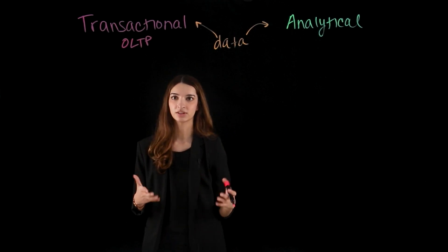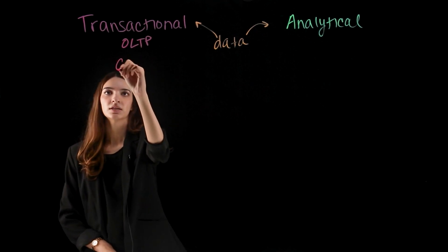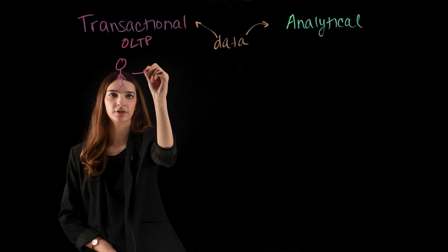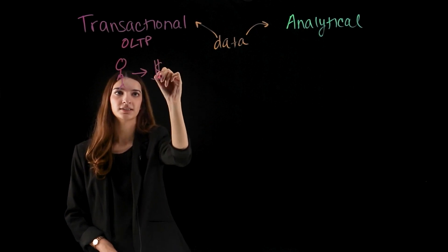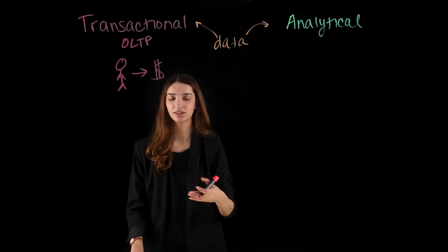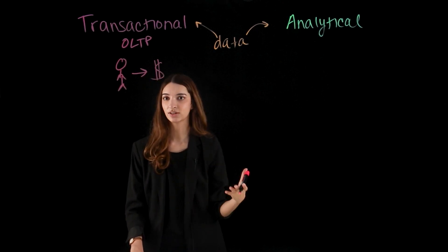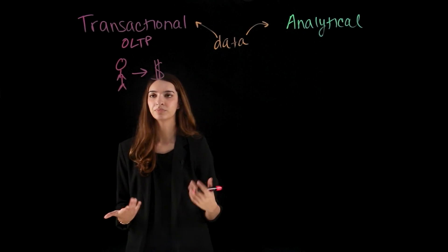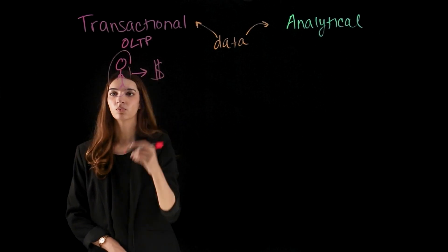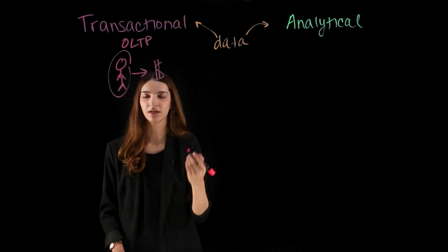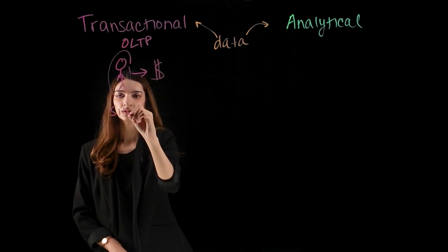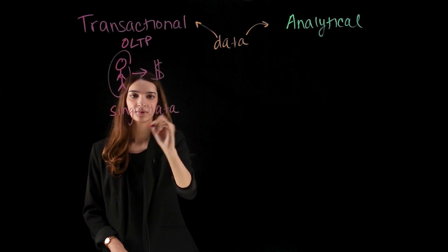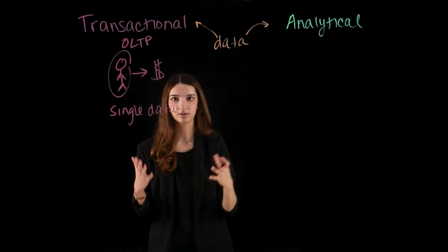Let's dive into one example — a customer making a purchase. Since this is day-to-day information, it is transactional. There are a few different properties that really define it as such. Firstly, we're focused on one customer, on one single entity. All transactional data is focused on a single entity, a single piece of data.